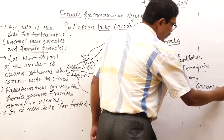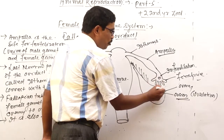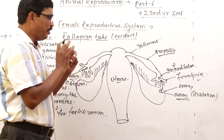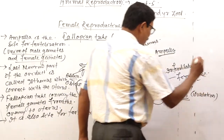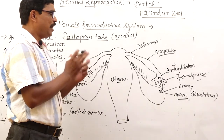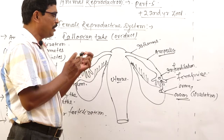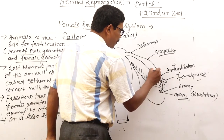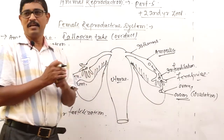After ovulation, the ovum is picked up by the funnel-shaped infundibulum, due to the presence of fimbriae. The infundibulum has finger-like fimbriae and a central pore-like opening called the ostium. Through the ostium, the ovum enters into the fallopian tube and waits in the ampulla for fertilization.